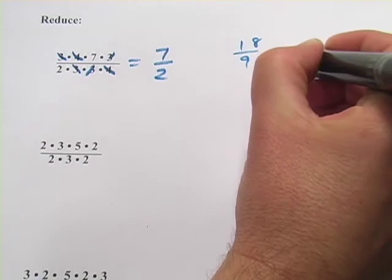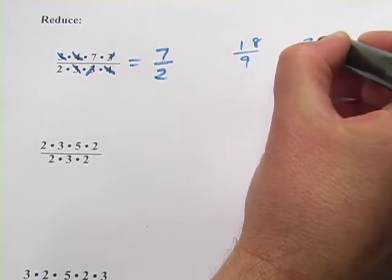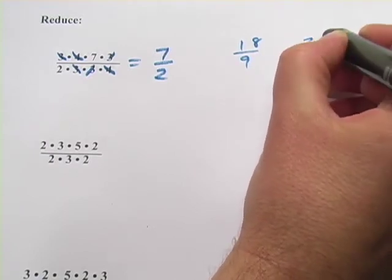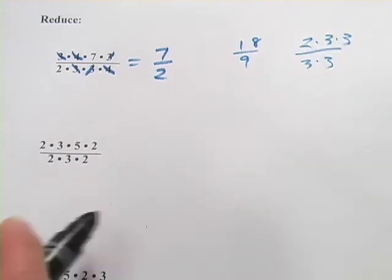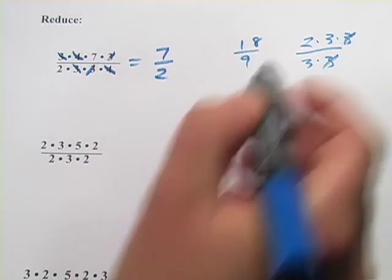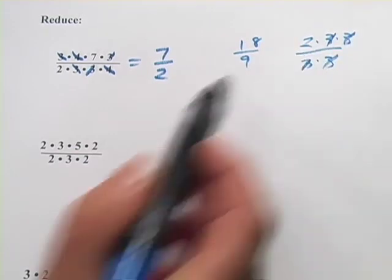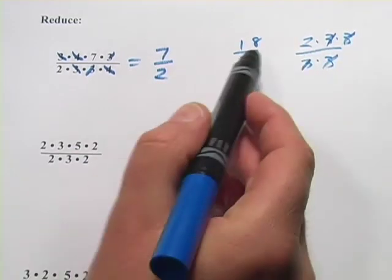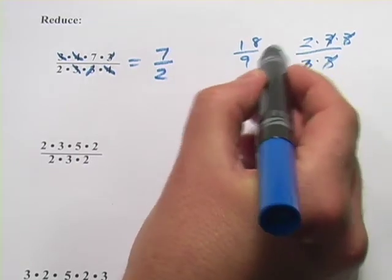9 on the bottom is 3 times 3. 18 is 2 times 9, which is 3 times 3. And what you'll see is 3 cancels with 3, 3 cancels with 3, and we're left with just 2. And of course, 18 divided by 9 is 2. So that makes sense.